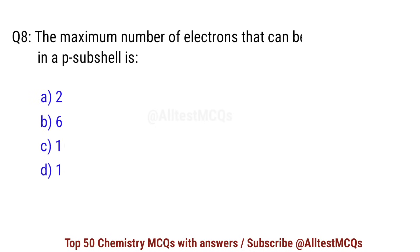Question number 8. The maximum number of electrons that can be accommodated in a P subshell is? Correct option is B: 6.